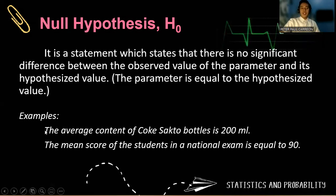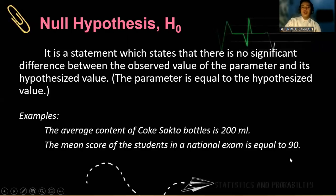Examples of null hypothesis: the average content of Coke Sakto bottles is 200 ml, or the mean score of the students in a national examination is equal to 90.